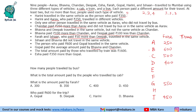The total amount paid by those who travelled by train was 1600. We do not know how many people travelled by train, and there could be different combinations summing to 1600, so we will ignore it for now. Isha paid 350 more than Gopal — Gopal is paying 550, so Isha paid 900 rupees.